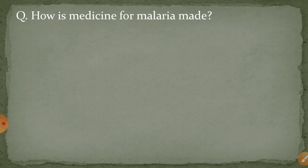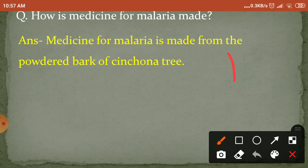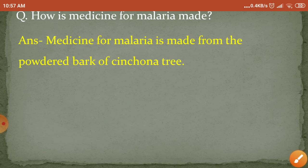Next question: how is medicine for malaria made? Malaria ki bimari ke liye jo davaai hai woh kaise banti hai? Medicine for malaria is made from the powdered bark of the cinchona tree. Toh malaria ki davaai cinchona tree ki chhal ke powder se banayi jaati hai.